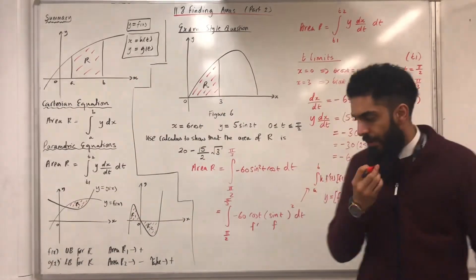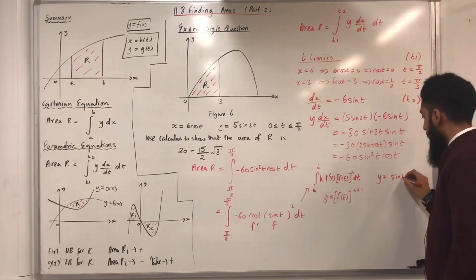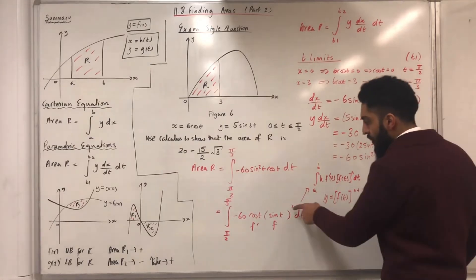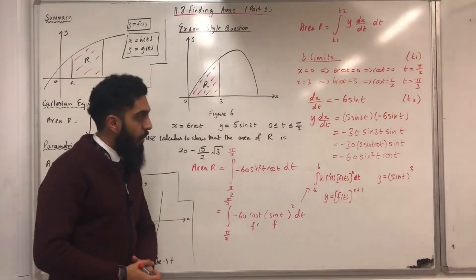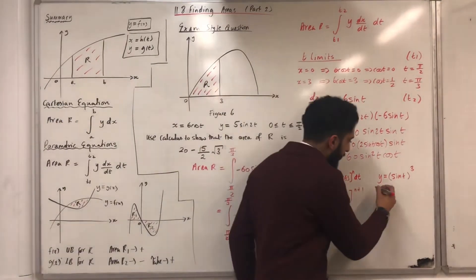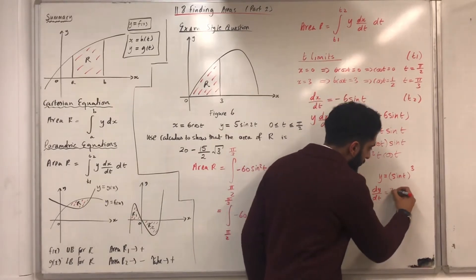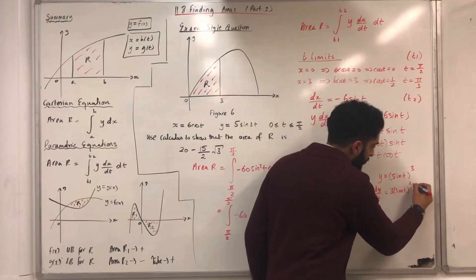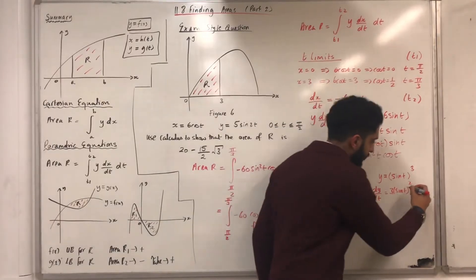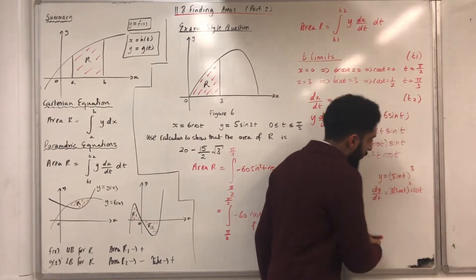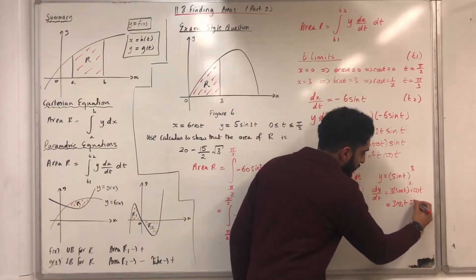So, what will I try as my y? Well, I'll just take y to be sin t in brackets to the power 2 plus 1, which is 3. Now, I need to differentiate y with respect to t. So, if I do that, I get dy over dt is equal 3 sin t to the power 2 multiplied by the derivative of sin t, which is cos t, which can be rewritten as 3 cos t sine squared t.